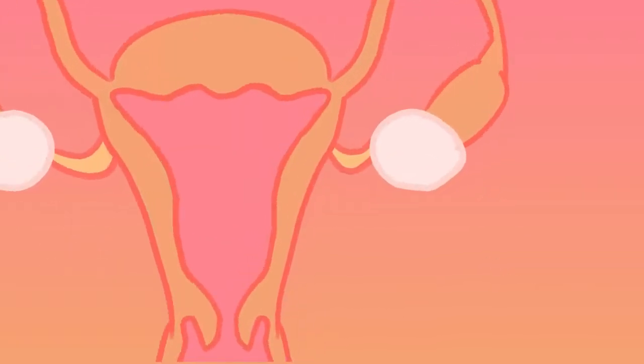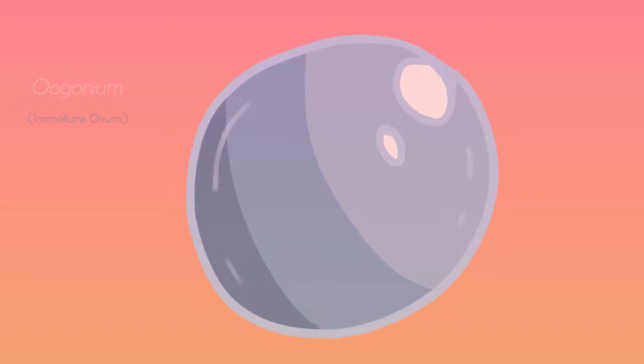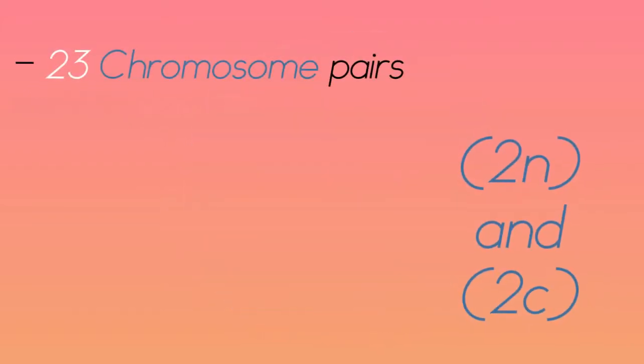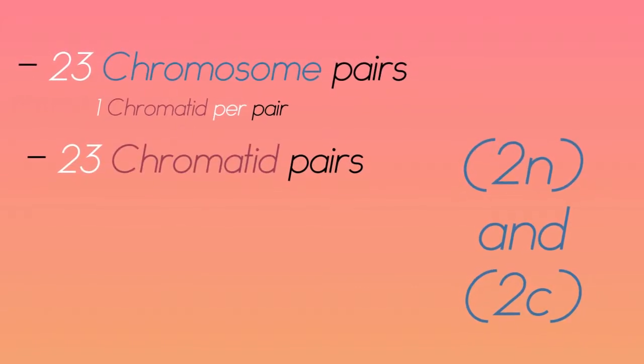Oogenesis takes place in the ovaries and starts with a diploid cell called an oogonium. Oogonia have 23 chromosome pairs, but each chromosome only contains one chromatid. Therefore, the total quantity of chromatids is 46.